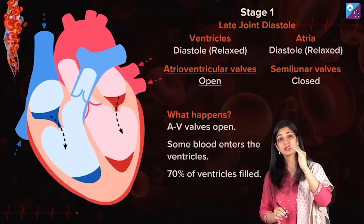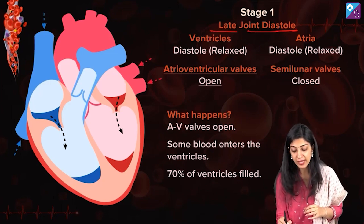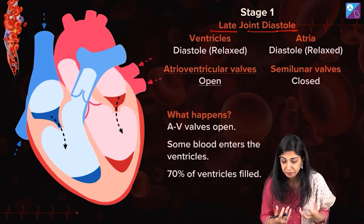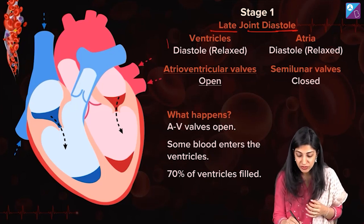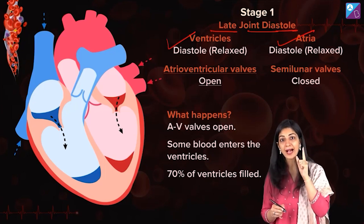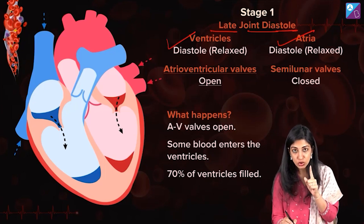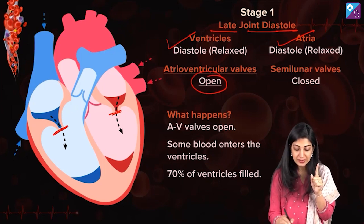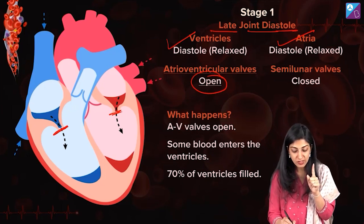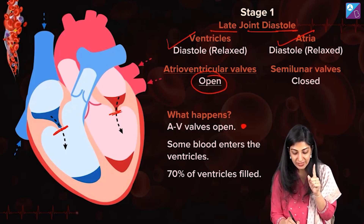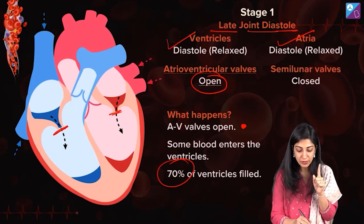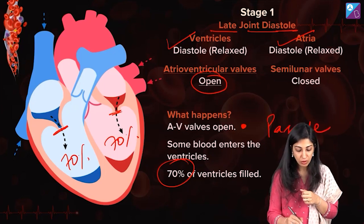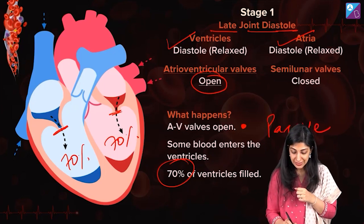Moving to the next stage — late joint diastole. We are still in the diastole. As the diastole proceeds, the blood is filled in the atria and it is going to exert some pressure. The ventricles are relaxed and the atria are still relaxed. Due to the pressure, the AV valves will now open. The semilunar valves are still closed. So in late joint diastole: AV valves open, and 70% of the ventricles get filled. This is just the passive flow of blood from the upper chamber to the lower chamber into the ventricles.